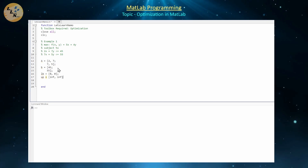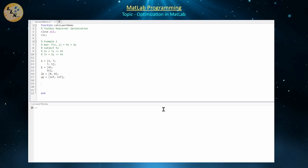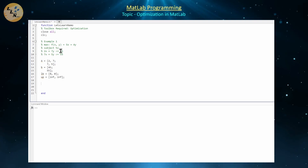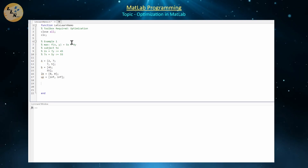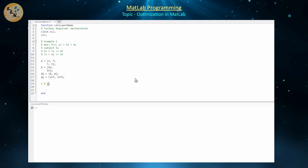The next thing to define is our objective function coefficients, which are 5 and 4. Keep in mind the linear programming function is based from the perspective of minimization. So if 5x + 4y is maximized at a point, then −5x − 4y is minimized at that same point. Therefore our coefficient vector C = [−5, −4].